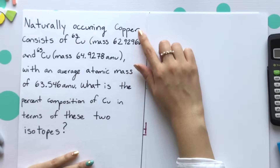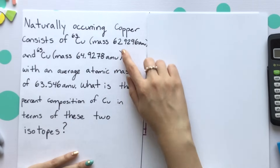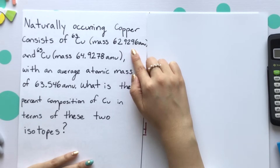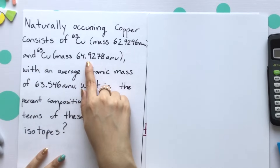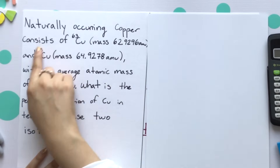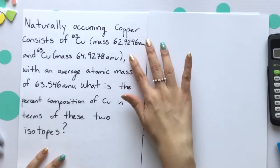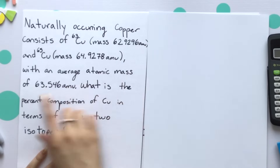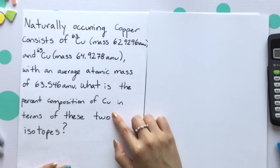In the second example, we are solving for percent composition or percent abundance — we're no longer solving for the average atomic mass. Naturally occurring copper consists of Cu-63, where our mass is equal to 62.9296 AMU, and our second isotope, copper-65, which has a mass of 64.9278 AMU. Quick note — they're just rounding here; this is the mass number, but they do give us the exact mass amount. With an average atomic mass of 63.546 AMU, what is the percent abundance of copper in terms of these two isotopes?